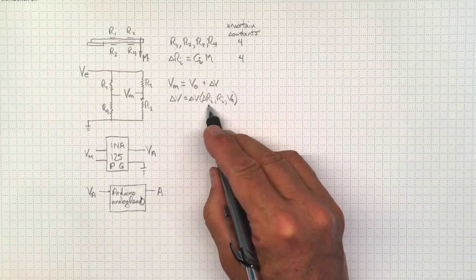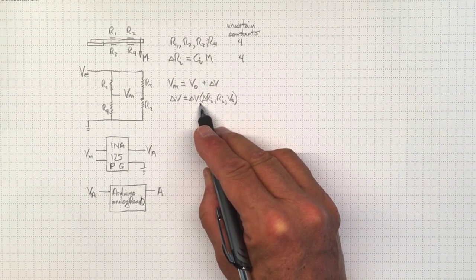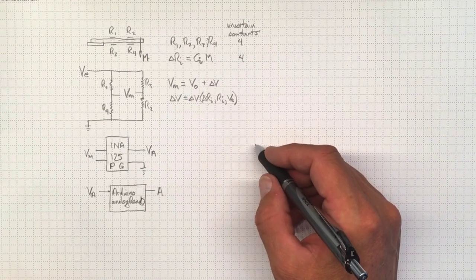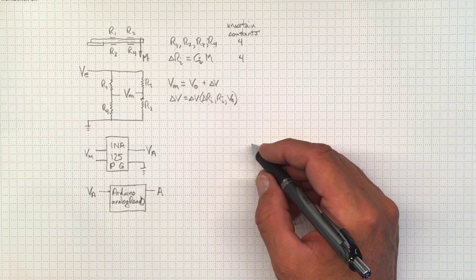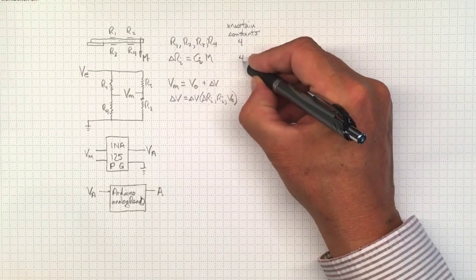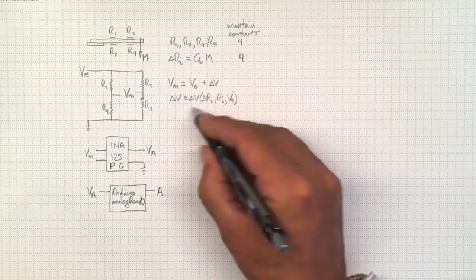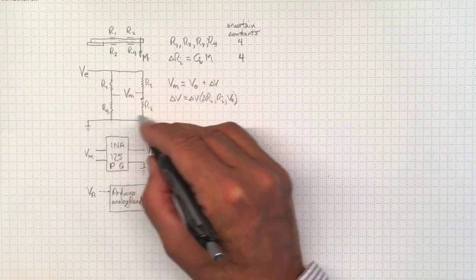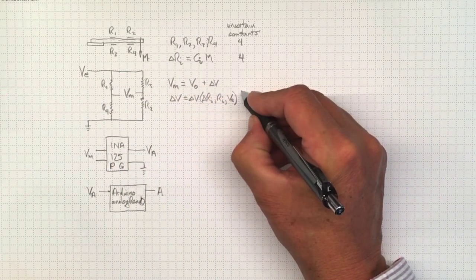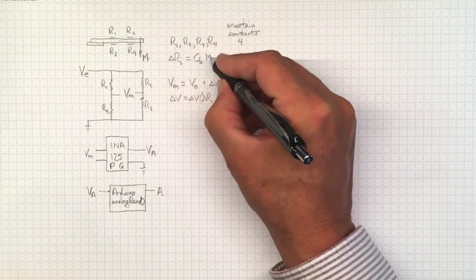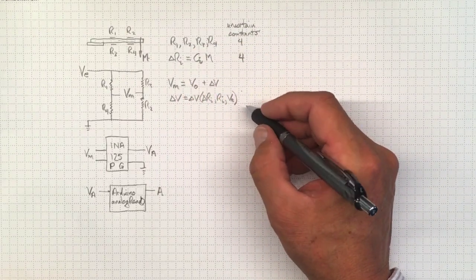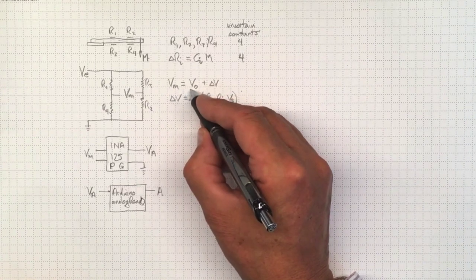And it's a linear function, so it's going to introduce another set of constants here. So we've added another four there. These ones here, we should be able to get that directly, so it doesn't add any additional uncertainty. It comes from analyzing our bridge with these resistances. And that will give us our output measured voltage.